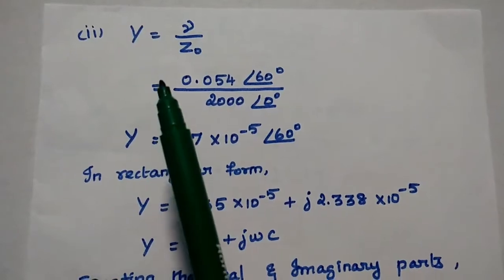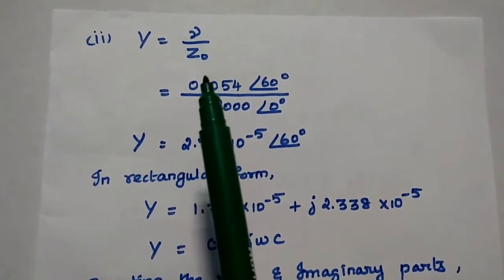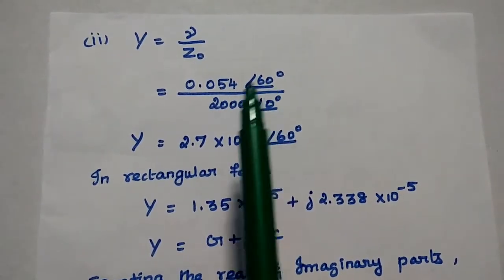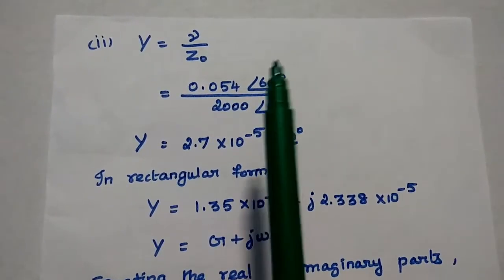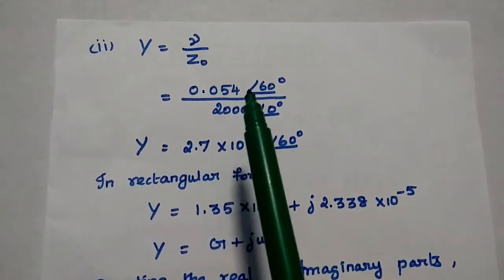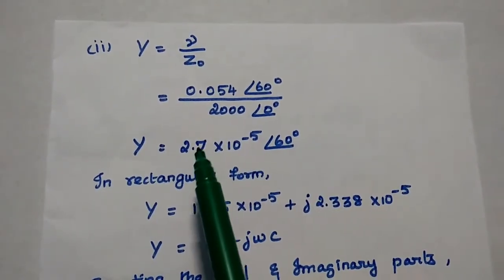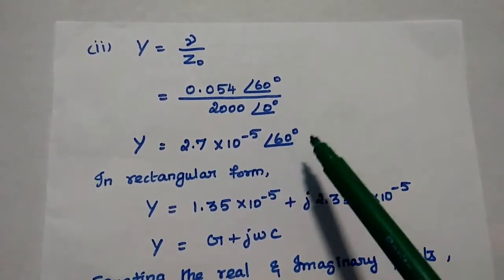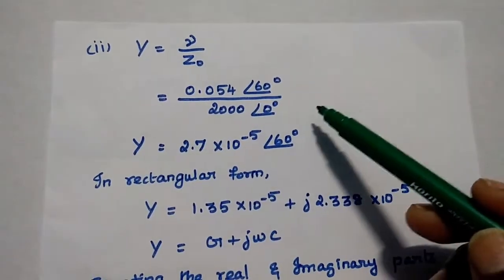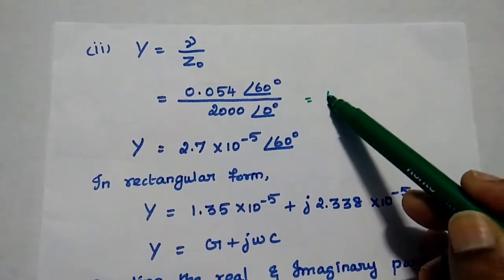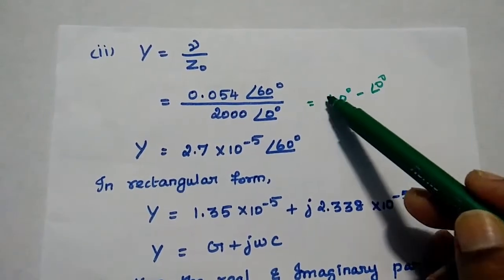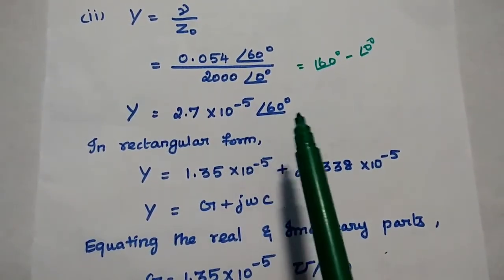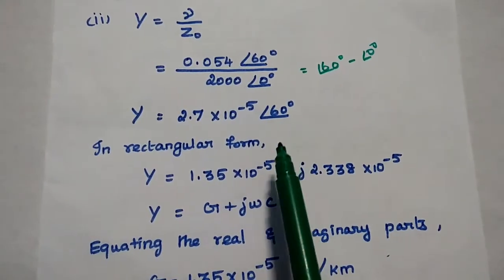Next, we use the formula Y equal to gamma divided by Z naught. Substituting the values: 0.054 with angle 60 degrees divided by 2000 with angle 0. Dividing the magnitudes gives 2.7 into 10 to the power of minus 5, and subtracting the angles gives 60 minus 0 equals 60 degrees. In polar form, dividing means subtracting the angles. So Y is equal to 2.7 into 10 to the power of minus 5 with angle 60 degrees, and we convert this to rectangular form.